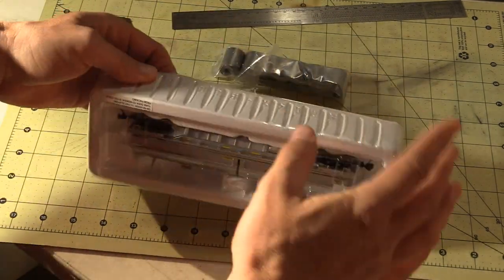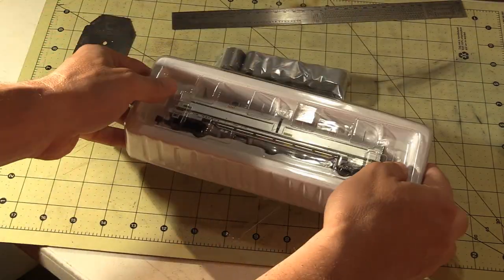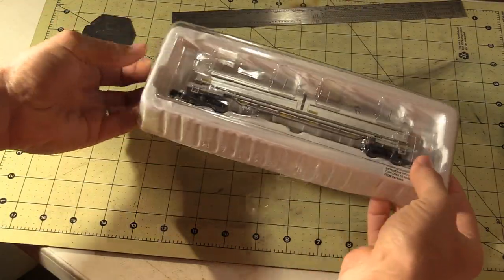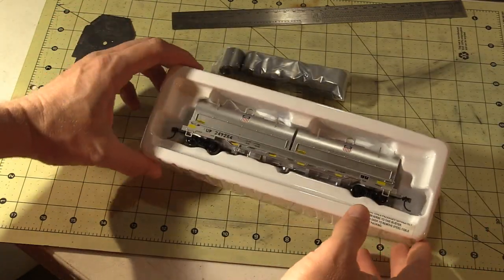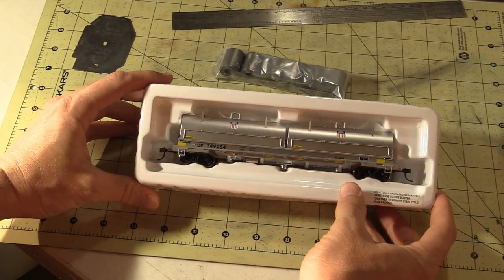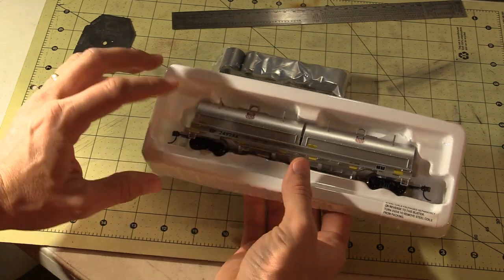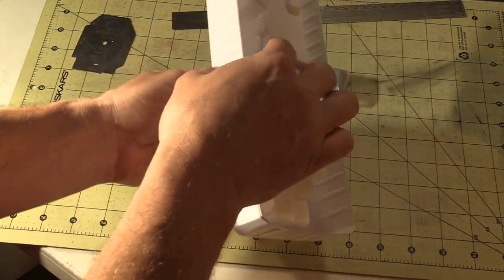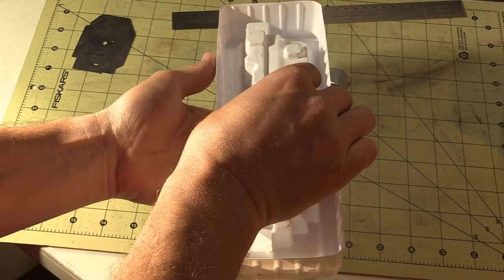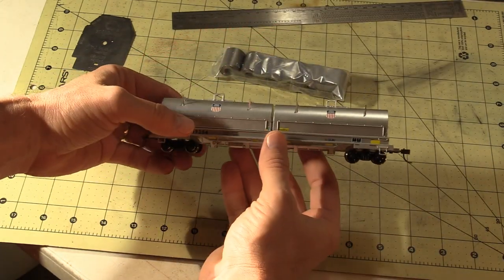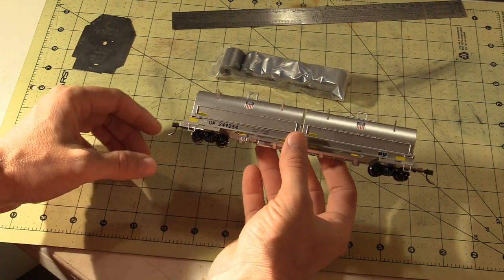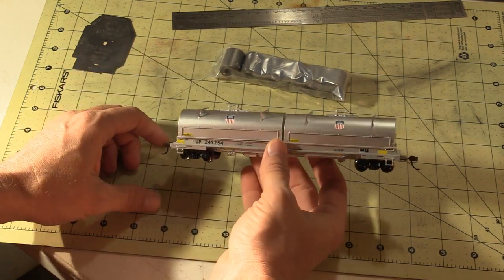Set those aside and we'll take off the lid from the blister pack. Just got a little tape there to hold that on. So here we've got the car. There's no clear sheet or anything like that. So to take it out, just carefully lean that over and then it's right there in your hand.